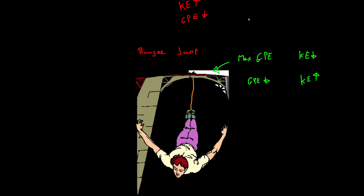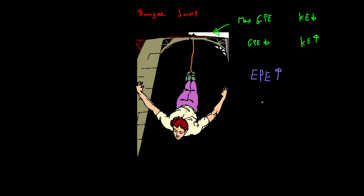Eventually the bungee straightens out and begins to stretch, because that's what bungees do — if they didn't stretch, a bungee jump would be a very painful experience. As the bungee stretches, the elastic potential energy is going to increase. What's important here is that when a bungee or an elastic band is stretched, it heats up. So you also get thermal energy — heat energy — produced. You've probably felt this if you've stretched an elastic band quite far and then felt the elastic itself; it's probably really hot.